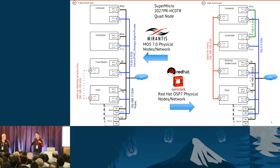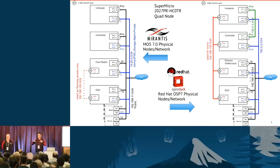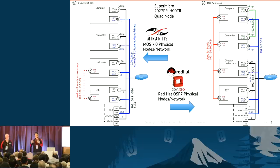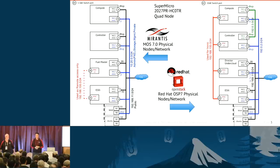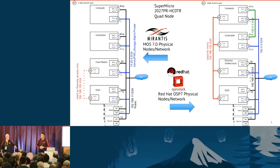One major assumption we made is that the physical layer — cabling, racking, switch configurations — has already been done for both distributions. Those steps are not part of what we're comparing. The networks are equally set up on both sides.